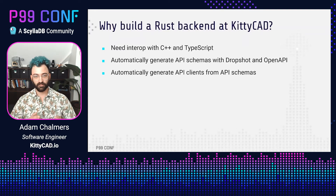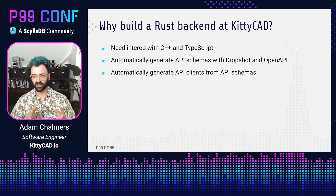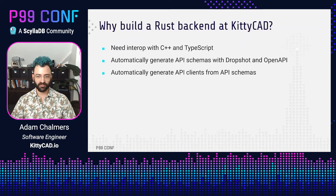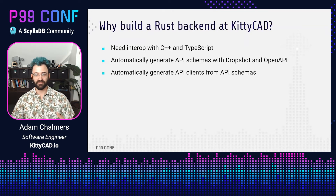Rust actually links really nicely with C++ code. There's a crate called CXX which lets you really easily interoperate Rust code and C++ code. The CAD suite front-end runs in the browser, and generally that means you're writing a lot of JavaScript. But we actually reuse our Rust backend libraries on the front-end by compiling them to WebAssembly, and this lets us share API schemas and type definitions between all of our code bases.